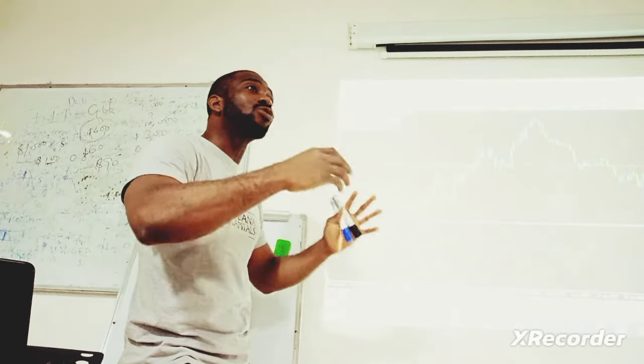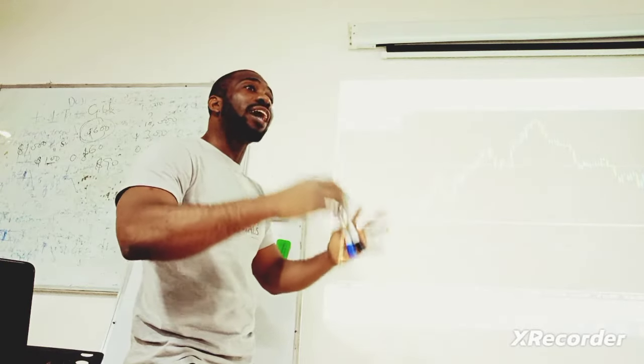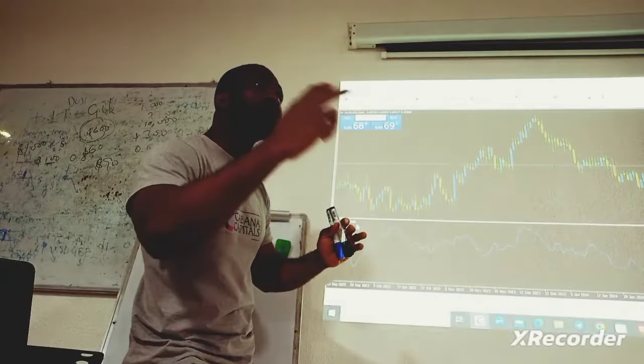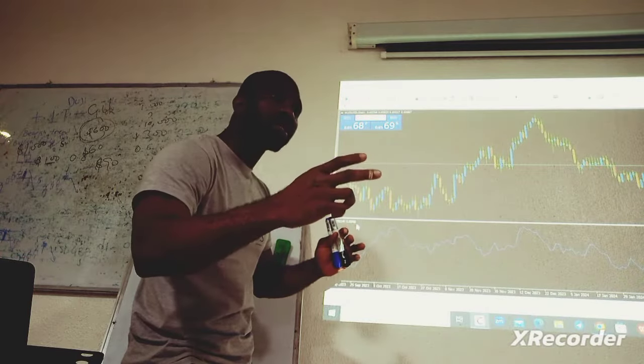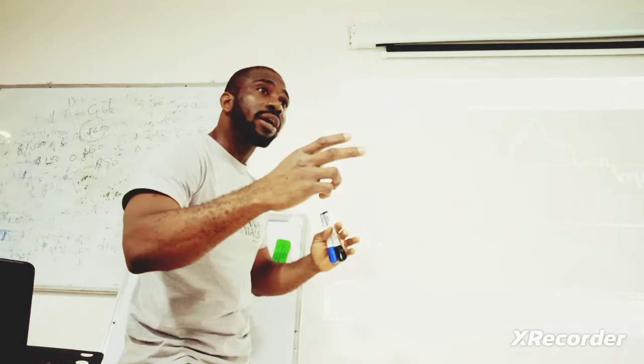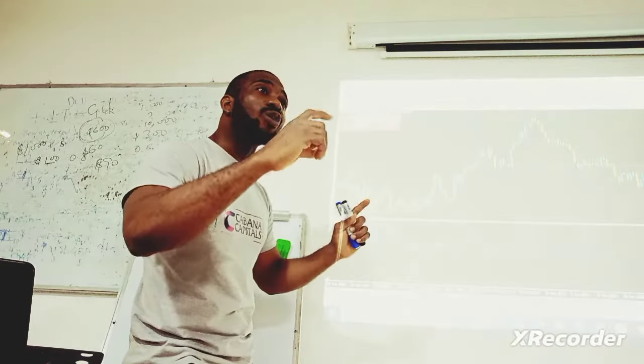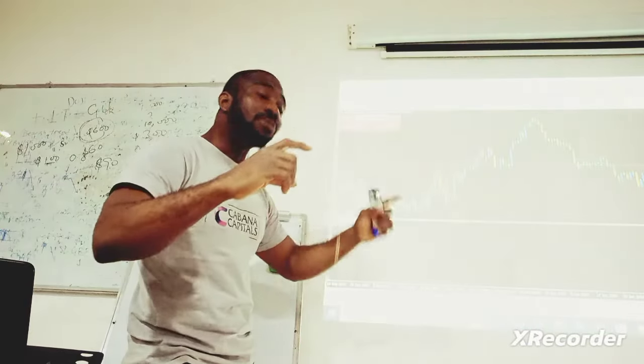It means that if I am going to sell AUD today, my target should be 41 pips or below 41 pips. Whether I am selling or buying, my target should be 41 pips.